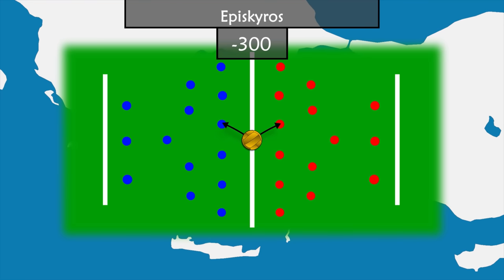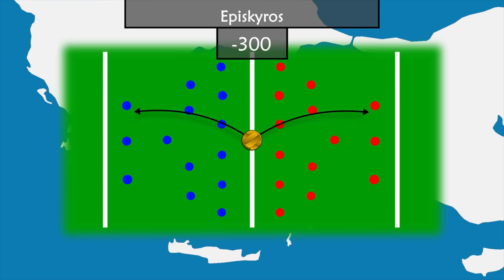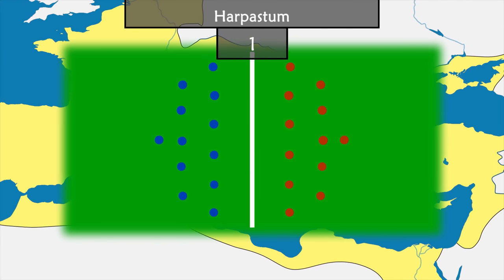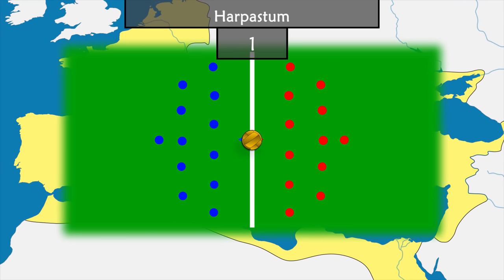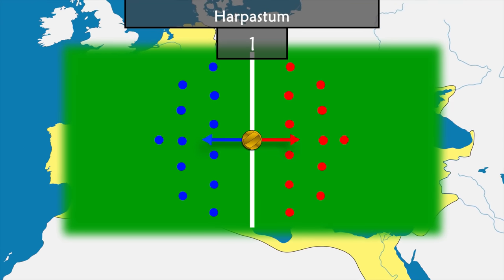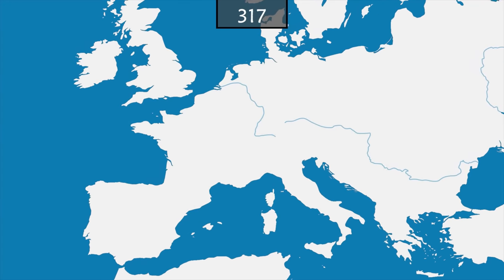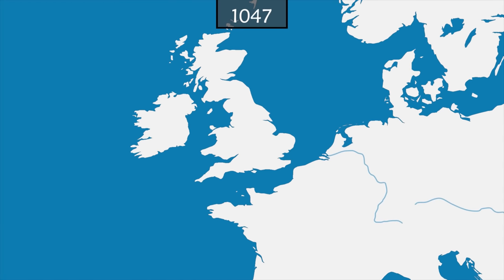The goal of episkyros is to send the ball over the opponent's line using hands and feet. The Romans based their game harpastum on this sport. In harpastum, two teams each try to keep the ball in their own camp as long as possible, again using hands and feet. Elsewhere in the world, many ball games are played with local rules.